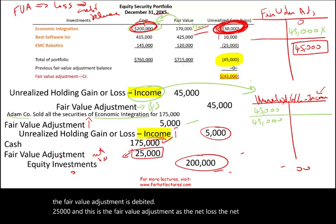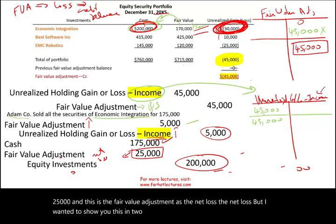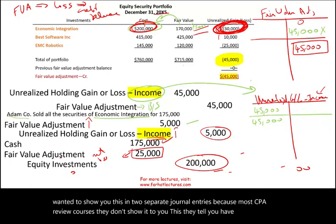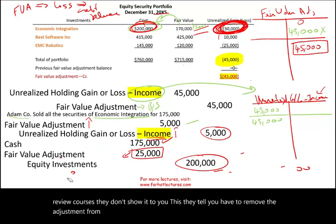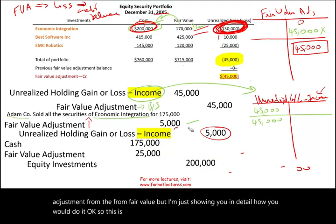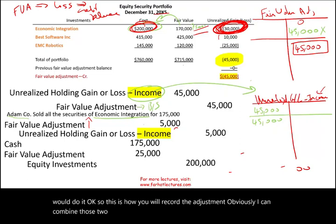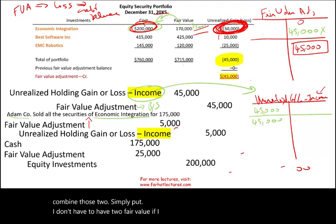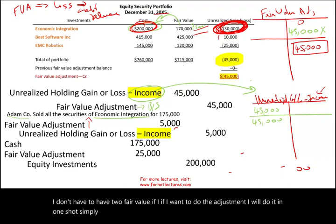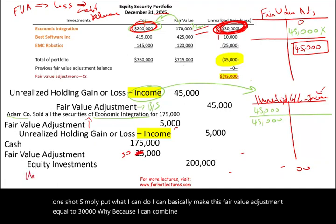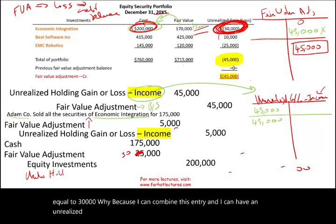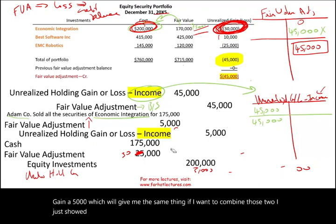I showed you this in two separate journal entries because most CPA review courses don't go into this level of detail. You could combine them — having Fair Value Adjustment equal to $30,000 and an Unrealized Holding Gain of $5,000 — which gives you the same result. On the CPA exam and in intermediate accounting, they don't typically go down to this level, but I wanted to show you the detail.